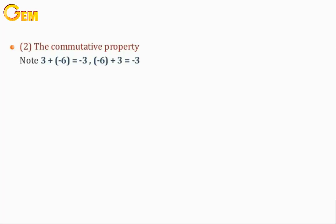Number 2: The commutative property. For example, 3 plus negative 6 equals negative 3, and negative 6 plus 3 also equals negative 3. That is to say, 3 plus negative 6 equals negative 6 plus 3. For every A and B belonging to Z, A plus B equals B plus A.